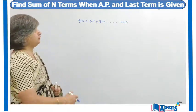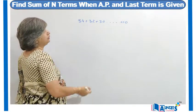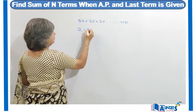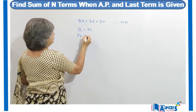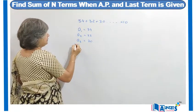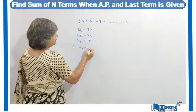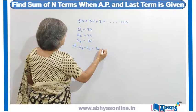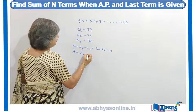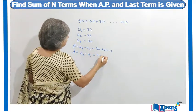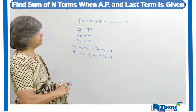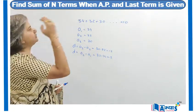As we just discussed, we will first find the common difference. We know that A1 = 34, A2 = 32, and A3 = 30. So D = A3 − A2 = 30 − 32 = −2. We also verify: D = A2 − A1 = 32 − 34 = −2. The common difference D is −2 and the last term is 10.